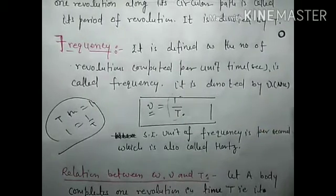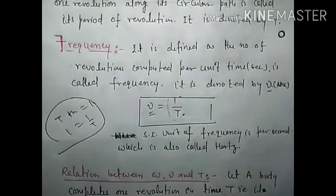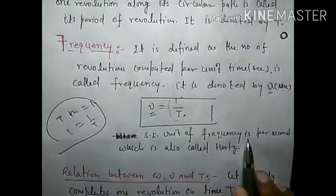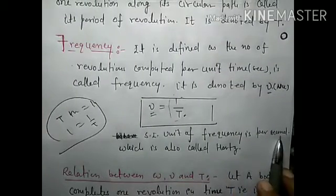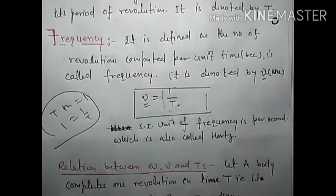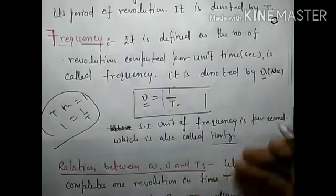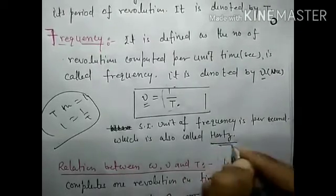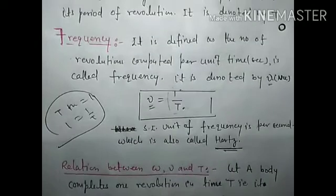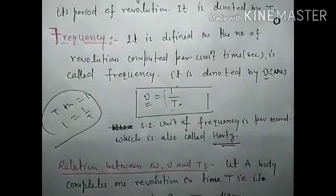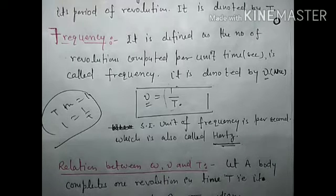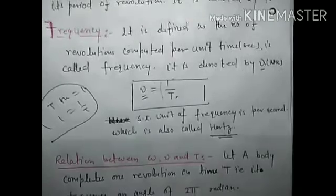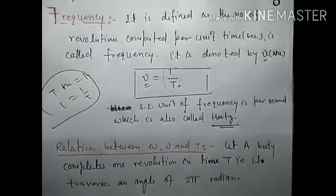Frequency को ν (nu) से denote करते हैं। SI unit of frequency is per second, जिसको hertz भी कहते हैं। Mostly hertz ही कहते हैं — जैसे FM radio पर 92.7 kilohertz पर सुना होगा।